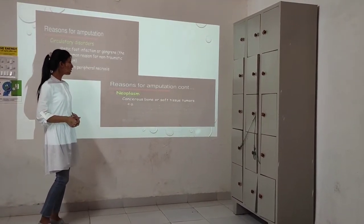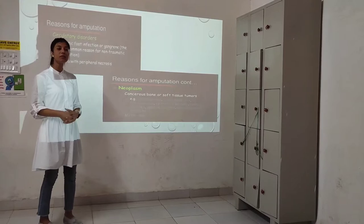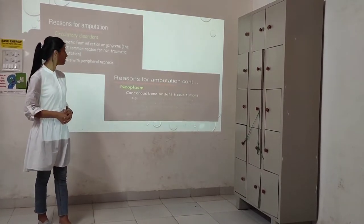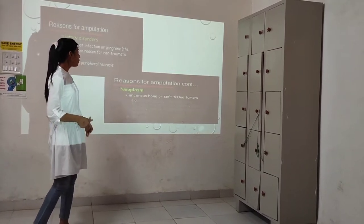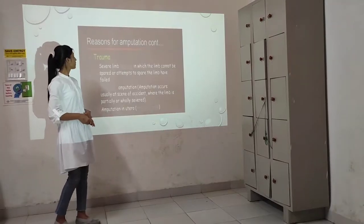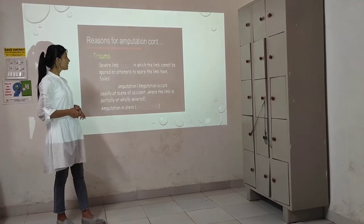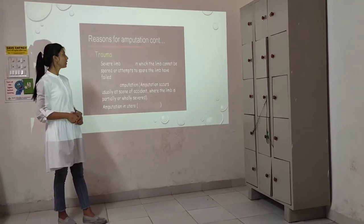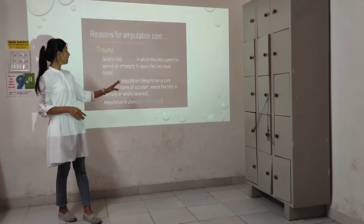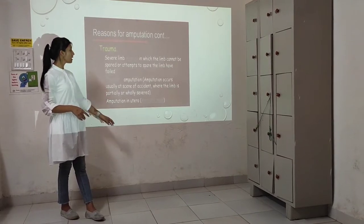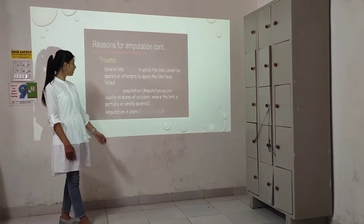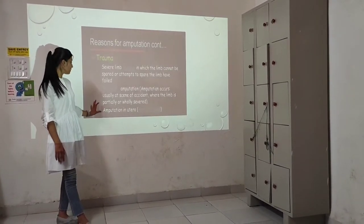Another reason for amputation is neoplasm — cancerous bone or soft tissue tumors, for example osteosarcoma, osteochondroma, and fibrosarcoma. Trauma is another reason — severe limb injuries in which the limb cannot be spared or attempts to spare the limb have failed. Traumatic amputation occurs usually in the scene of accidents where the limb is partially or completely severed.